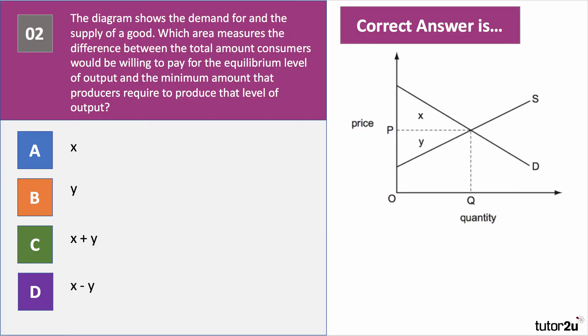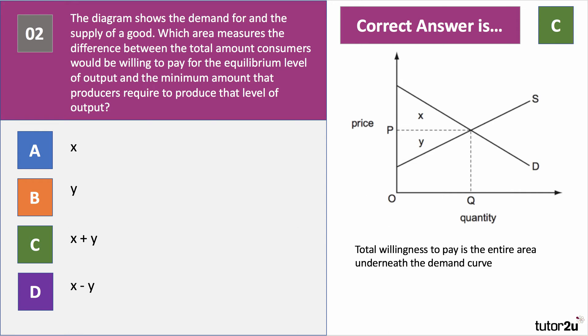Question number two. The diagram shows the demand for and the supply of a good. Which area measures the difference between the total amount consumers would be willing to pay for the equilibrium level of output and the minimum amount that producers require to produce that level of output? The answer is C — X plus Y. The total willingness to pay is the entire area underneath the demand curve, and the area underneath the supply curve is the minimum amount producers require. Of that combined area, Y would be producer surplus and X would be consumer surplus.